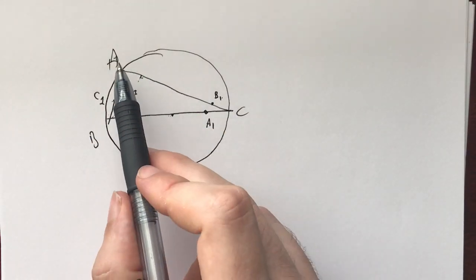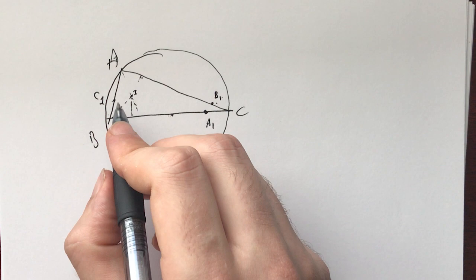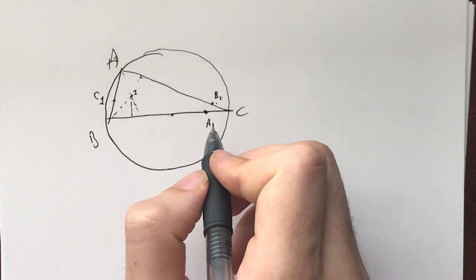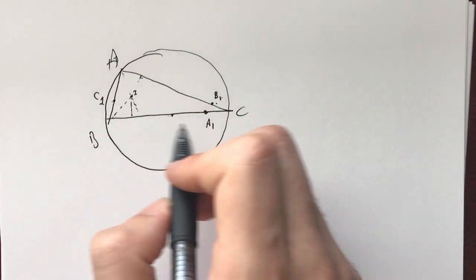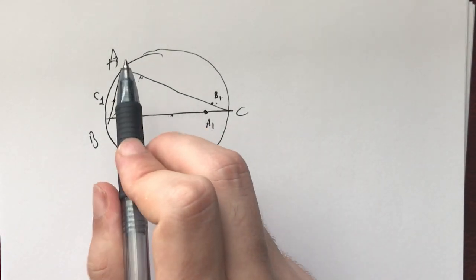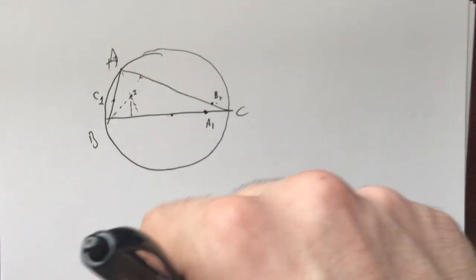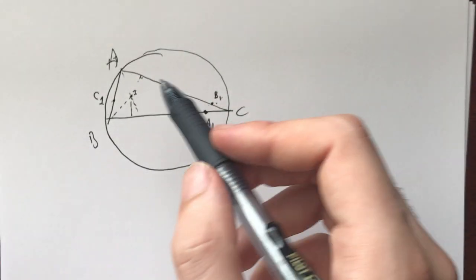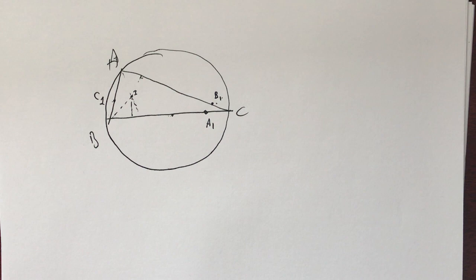What you have is triangle ABC with A1, B1, C1 being the points where the excircles of A, B, and C touch the sides BC, CA, and AB respectively. What you need to prove is that if the circumcenter of triangle A1B1C1 lies on the circumcircle of triangle ABC, then triangle ABC is a right-angled triangle.